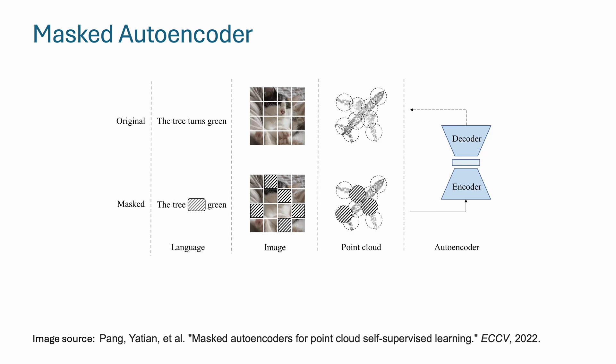Along the way, self-supervised learning has gained traction in computer vision. In particular, the generative pre-training method, Masked Autoencoder, has shown great promise and been extended to 3D by targeting point clouds, meshes, or voxels.